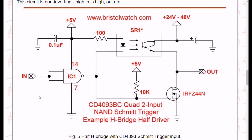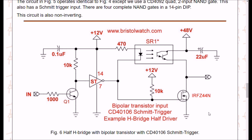Almost like the previous slide, I'm using a CD4093 NAND gate with Schmitt trigger input. You connect the two inputs together and it acts as a Schmitt trigger inverter — same deal throughout. The logic GPIO voltage has to match the VCC, and SR1 still separates my higher motor voltages away from the logic voltages.